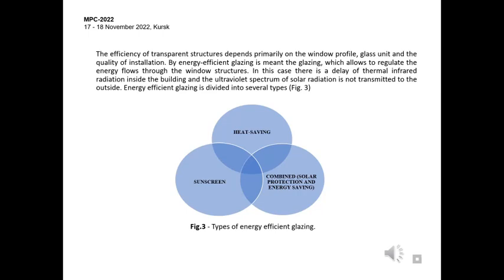The efficiency of transparent structures depends primarily on the window profile, glass unit and the quality of installation. By energy efficient glazing it means the glazing which allows to regulate the energy flows of the window structures. In this case there is delay of thermal infrared radiation inside the building and the ultraviolet spectrum of solar radiation is not transmitted to the outside.